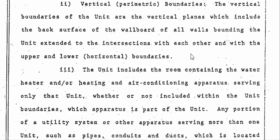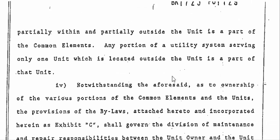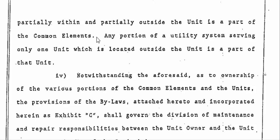Section three: the unit includes the room containing the water heater and/or heating and air conditioning apparatus serving only that unit, whether or not included within the unit boundaries, which apparatus is part of the unit. Any portion of the utility system or other apparatus serving more than one unit — such as pipes, conduits, and ducts — which is located partially within and partially outside the unit is a part of the common elements. Any portion of the utility system serving only one unit which is located outside the unit is a part of that unit.